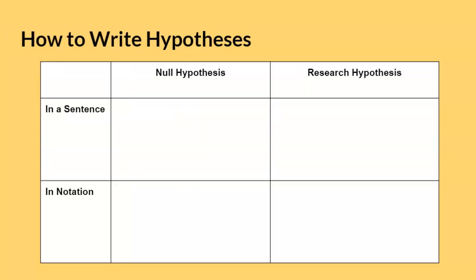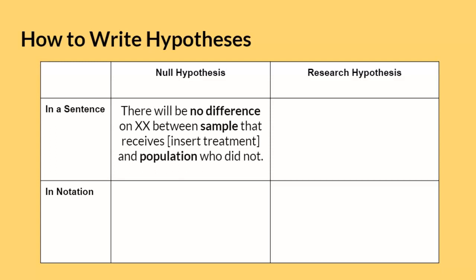Writing hypotheses the first time can be confusing for students, especially since you will need to write them in both a sentence and in statistical notation. So let's get started. For the null hypothesis, recall that we are predicting that nothing will happen. Thus, in a sentence, the null hypothesis would be written like this. The xx here refers to what we are studying. Insert treatment refers to writing in the specific treatment given as part of the study. It is important that you clearly state that a sample is being compared with a population.